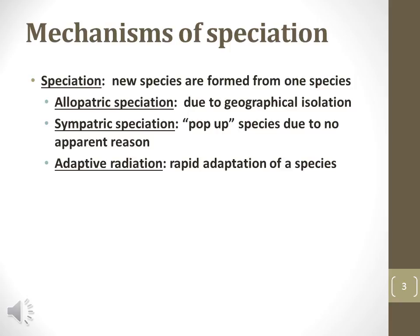Speciation is the development of new species from old species. Allopatric speciation occurs in populations isolated from each other. Sympatric speciation is the emergence of a new species from within a surrounding population. Few concrete examples of sympatric speciation are known. Adaptive radiation refers to the rapid production of many species in a short evolutionary time scale.